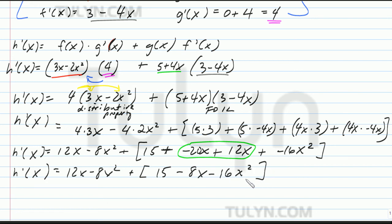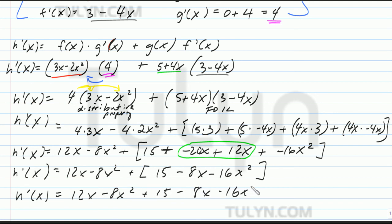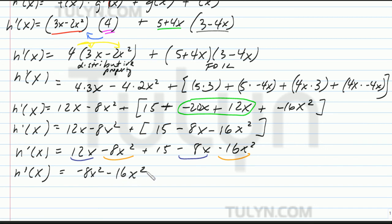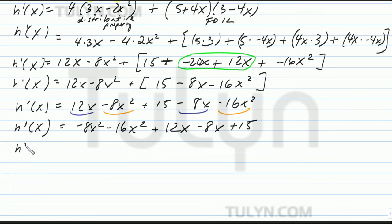Because when you add a negative, you're subtracting. Go ahead and regroup so that like terms are together: negative 8x squared minus 16x squared, plus 12x minus 8x, plus 15. So h prime of x equals negative 24x squared plus 4x plus 15.